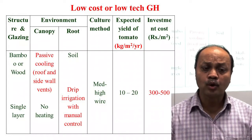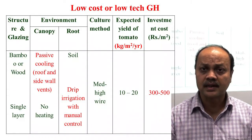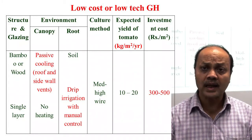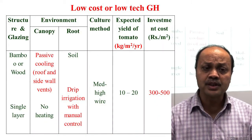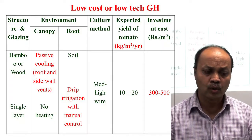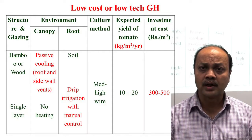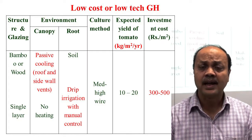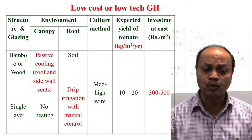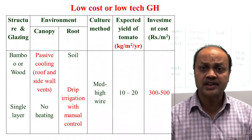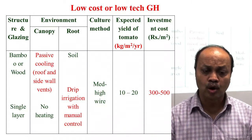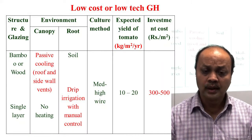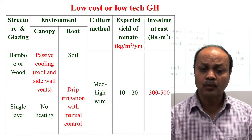In the low-cost greenhouse, the structure uses bamboo or timber, and a single-layer 200-micron plastic film is used for cladding. Insect nets can be used as required. Passive cooling is used; there is no heating system. For the root system, soil and drip irrigation with manual control are used.